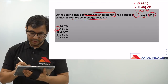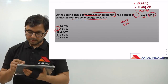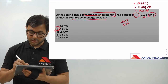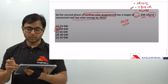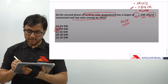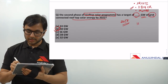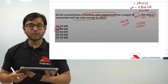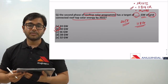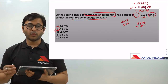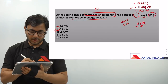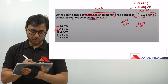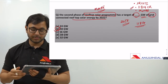It was launched in the year 2017 and in this year particularly a total of 11,814 crores was allocated. This particular program comes under the Ministry of New and Renewable Energy, MONRE — Ministry of New and Renewable Energy.